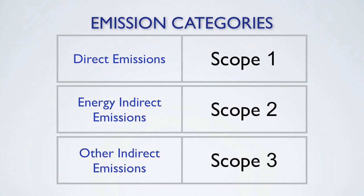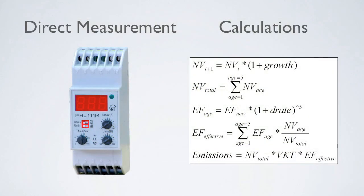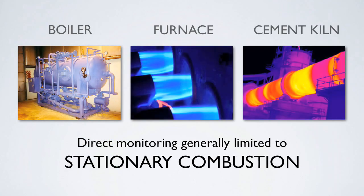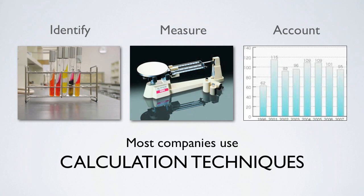Once all emission sources have been identified and categorized, a calculation method should be selected to quantify the actual emissions into the atmosphere. There are two primary methods for assessing greenhouse gas emissions: direct measurement and the use of calculations. Direct measurement has traditionally been limited to stationary combustion applications such as boilers, furnaces, and kilns. However, under the EPA's mandatory reporting rule, many facilities are now required to use direct monitoring equipment. Most companies use calculation techniques to quantify their greenhouse gas emissions.